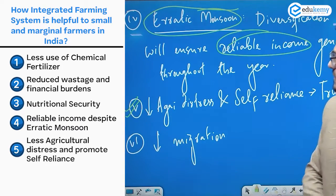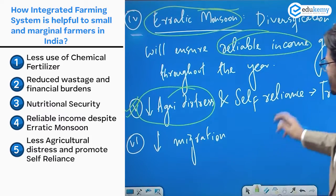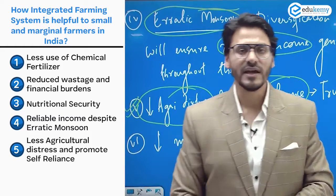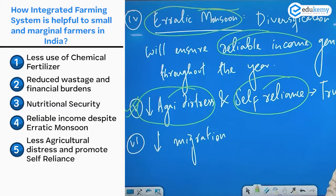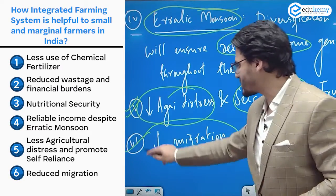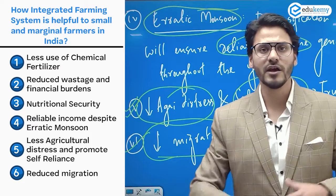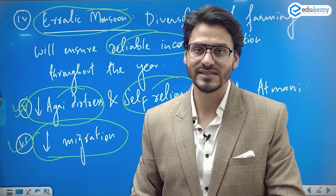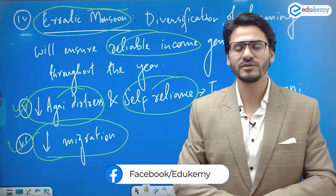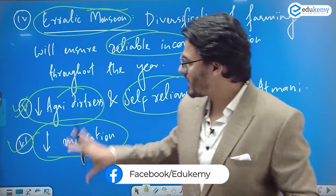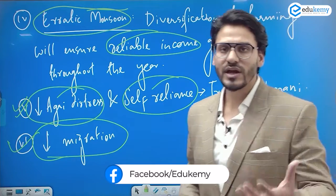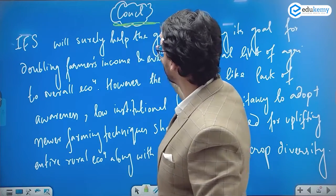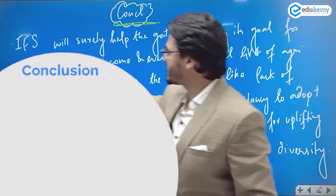Number five: it will reduce agricultural distress and make farmers self-reliant — atmanirbhar. Number six: reduced migration. Migration happens due to lack of employment opportunities and disguised unemployment in the agricultural sector. Introducing an integrated farming system can reduce the migration of farmers from rural to urban areas.